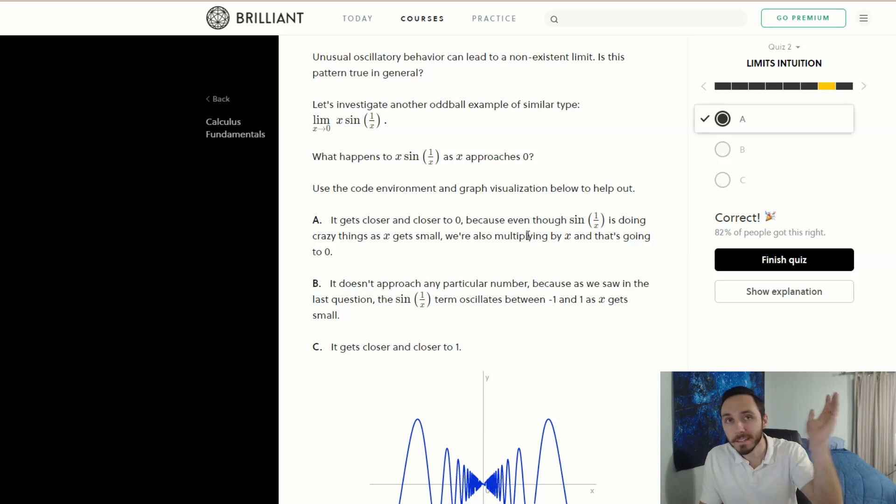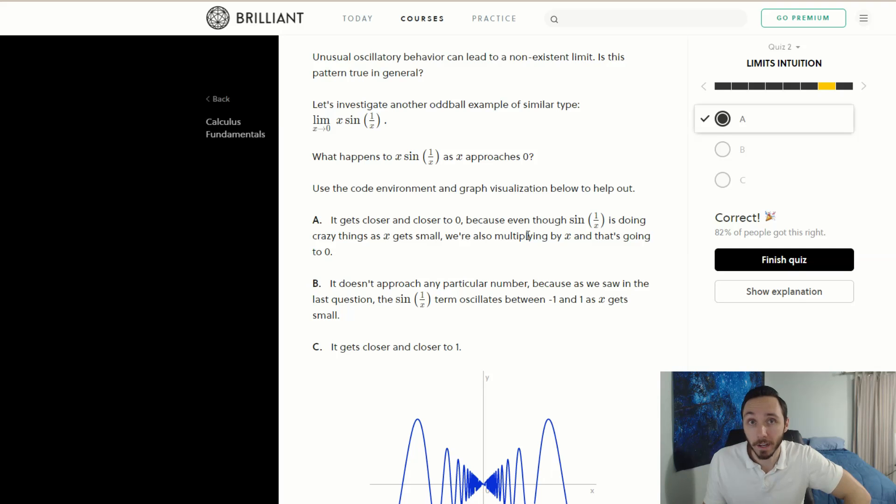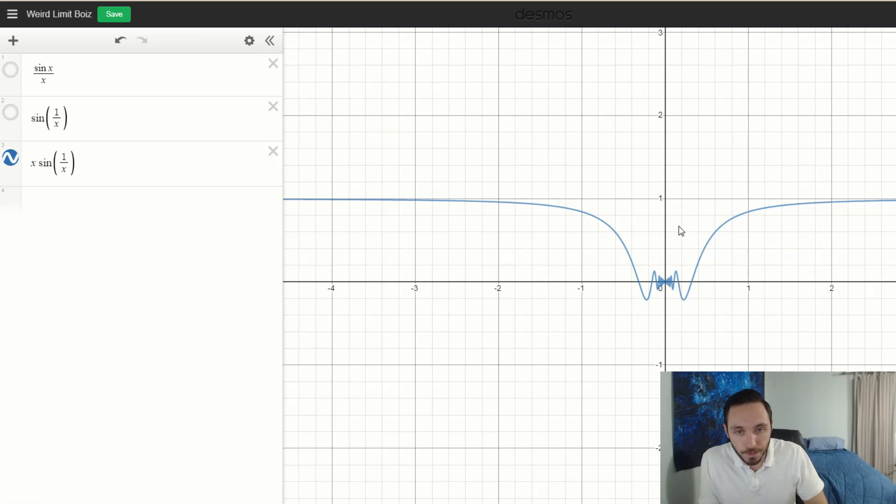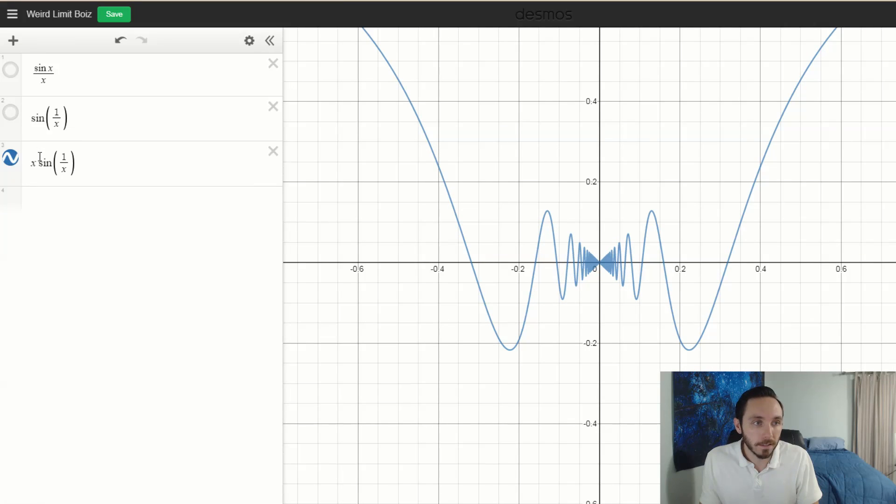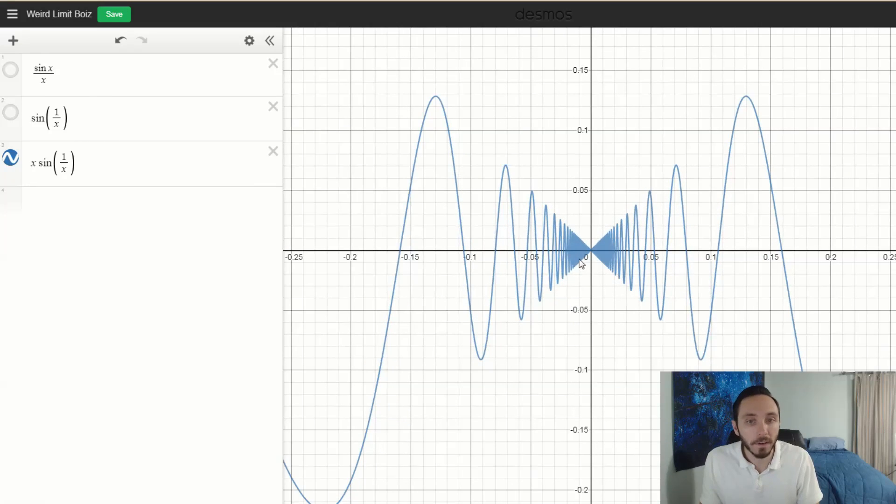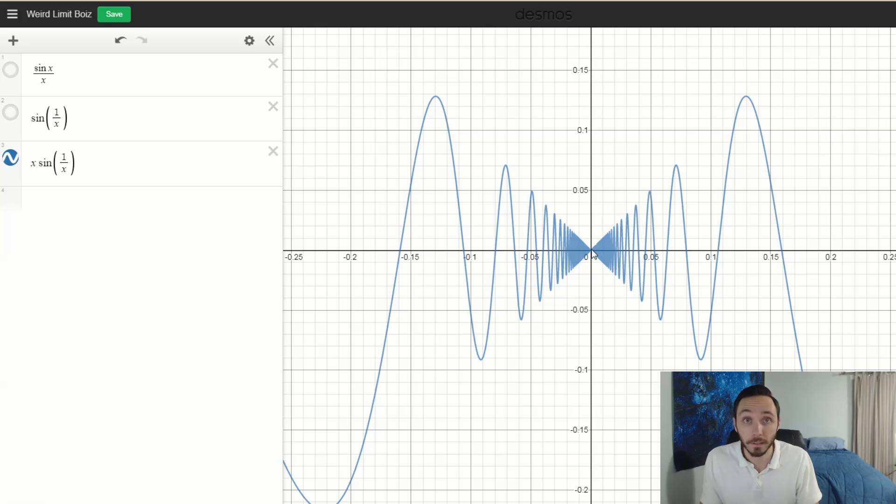It gets closer and closer to zero because we're multiplying by x. X ends up being pretty much zero and it doesn't matter what's going on with sine of one over x. So you can graph these on Desmos too and that's a nice visualization. You can play around with it, you can scroll, and very clearly here with x times sine of one over x, I keep scrolling in, very clearly I'm getting really really close to zero.